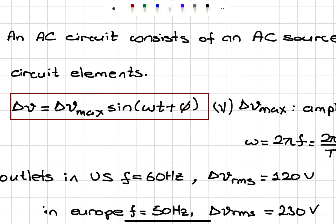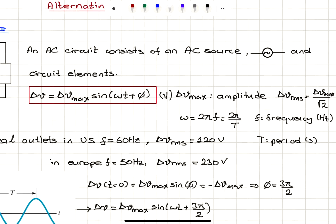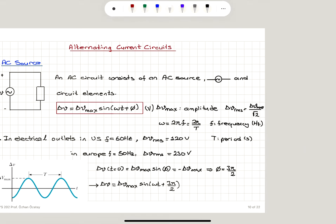The voltage is ΔV_max × sin(ωt + φ), where φ is a possible phase angle. ΔV_max is the amplitude of the voltage wave. The root mean square value ΔV_rms, as we will see later, is ΔV_max divided by square root of 2. The angular frequency ω is 2π times frequency, or 2π divided by the period. Frequency is measured in hertz and period in seconds.